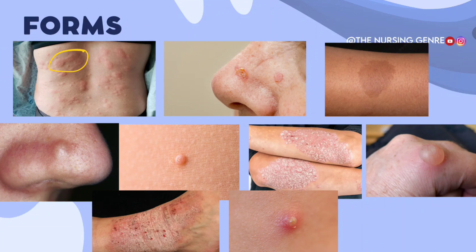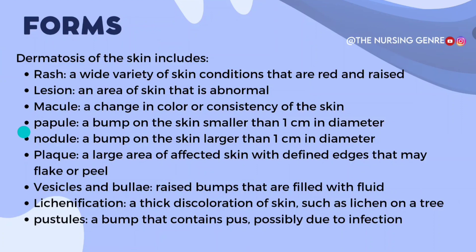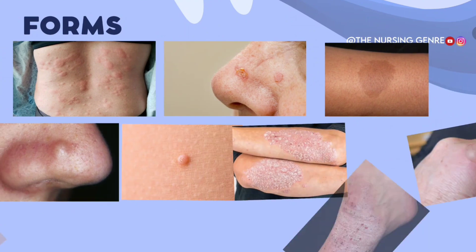This one is a rash — red and raised. So next one is lesion — an area of skin that is abnormal.